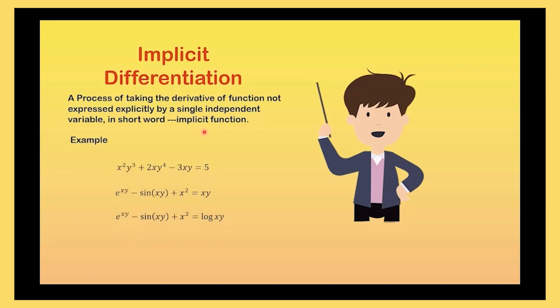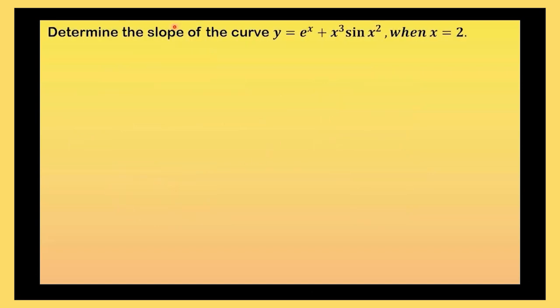So what are the examples of explicit functions? As you can see here, y is not expressed in terms of x. But instead, both sides of the equation contains not only one, but more than one type of variable here.